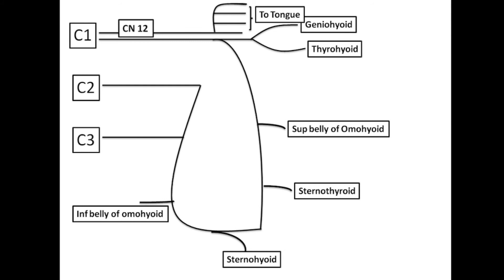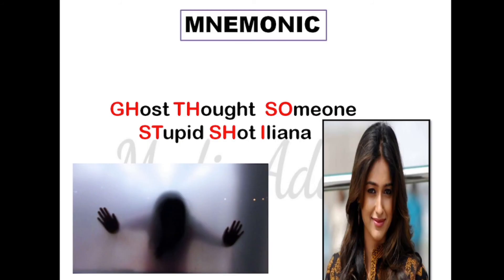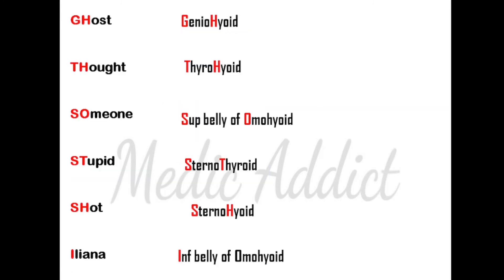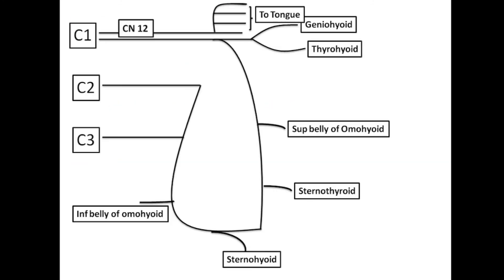The mnemonic is: 'Ghost Thought Someone Stupid Shot Iliana.' That is, there is a ghost who thought that some stupid person shot the actress Iliana. In this mnemonic, GH stands for geniohyoid, TH stands for thyrohyoid, SO stands for superior belly of omohyoid, ST stands for sternothyroid, SH stands for sternohyoid, and I stands for inferior belly of omohyoid.